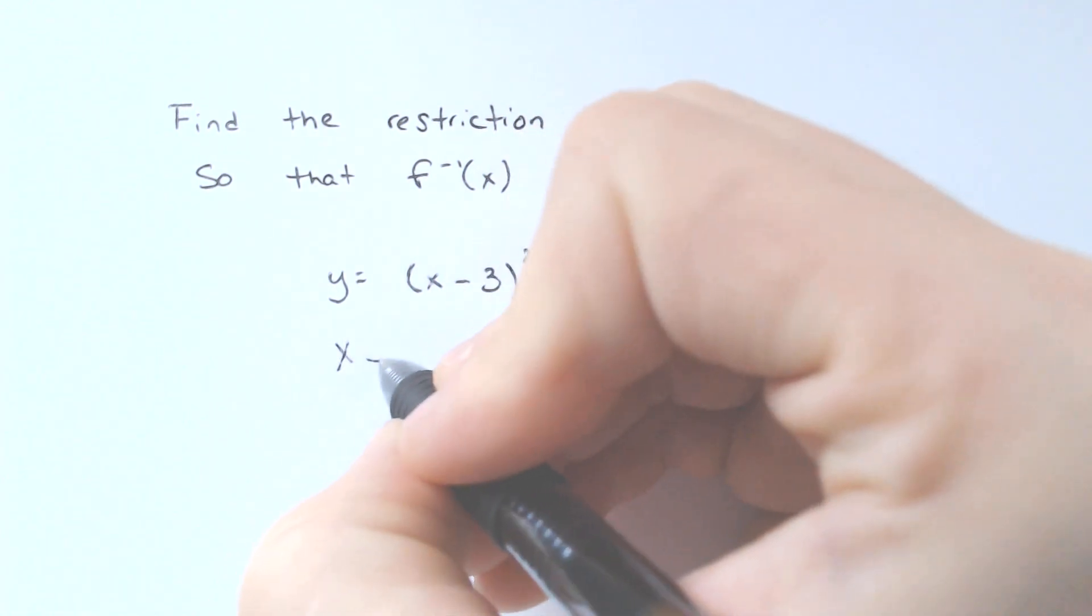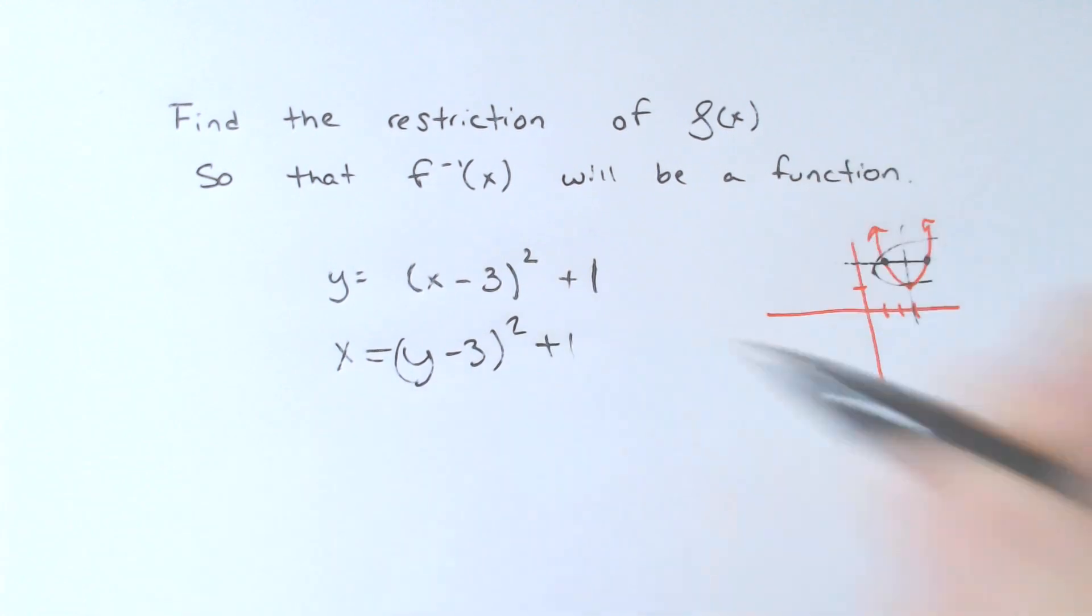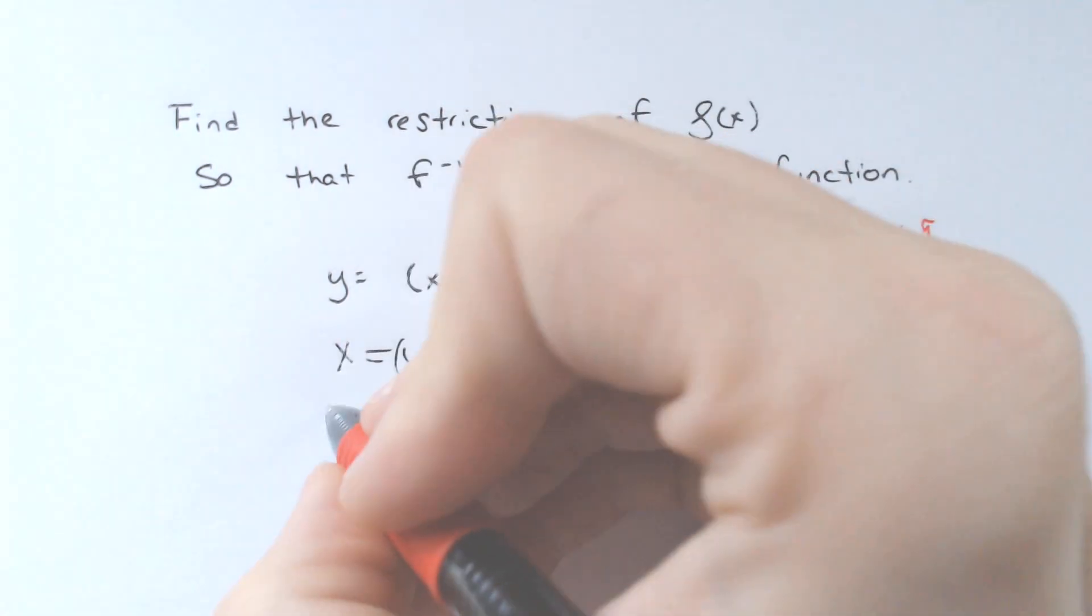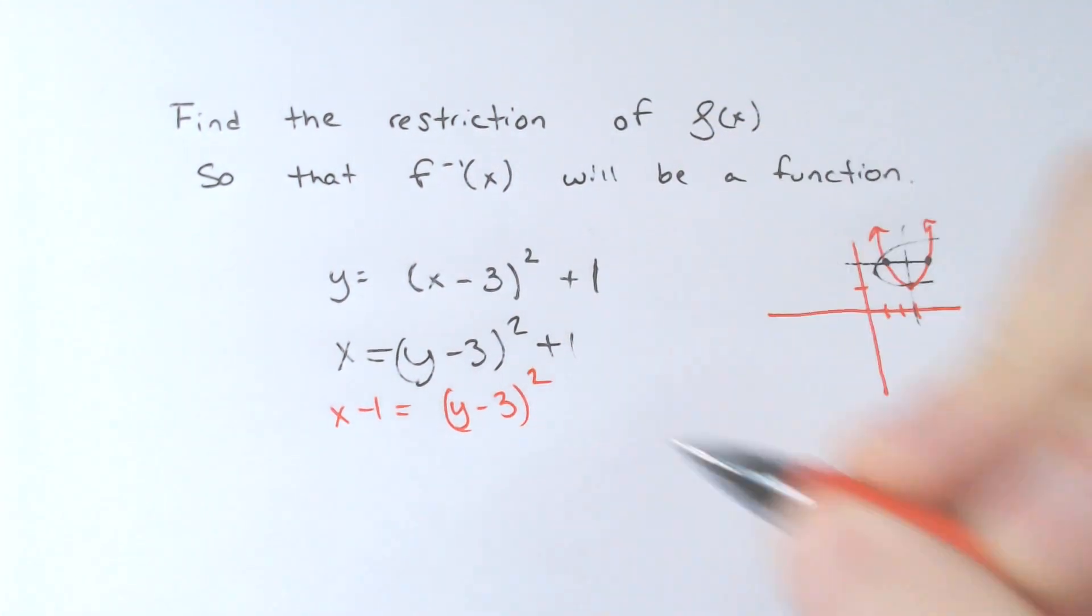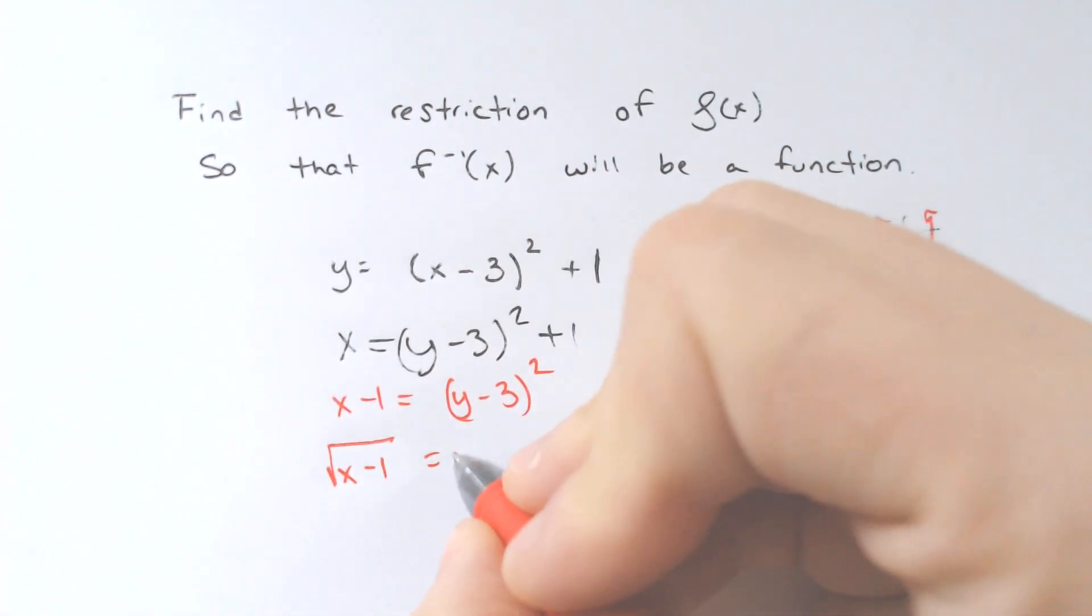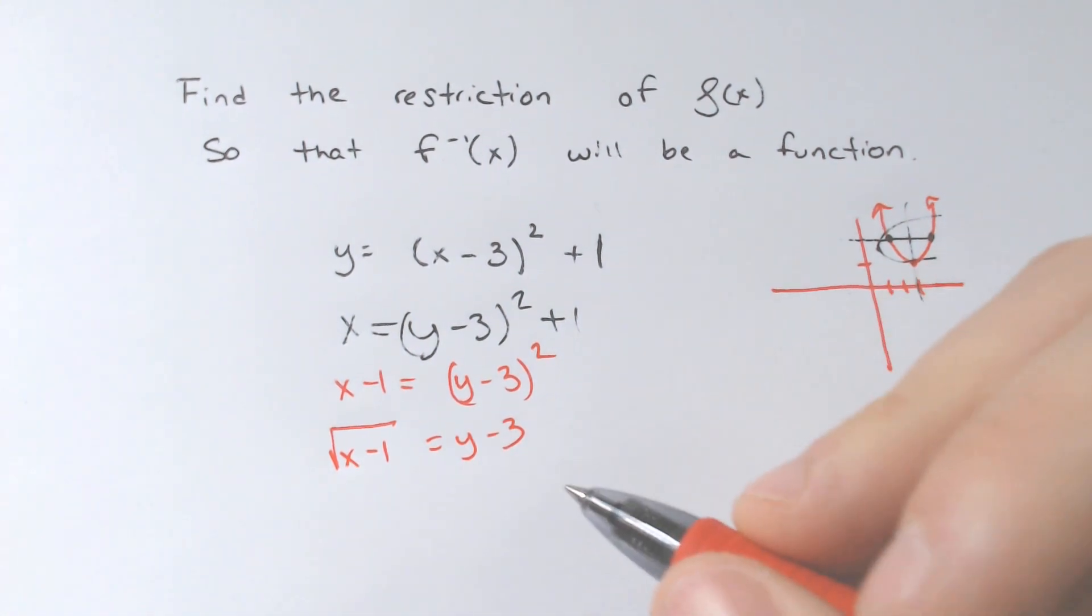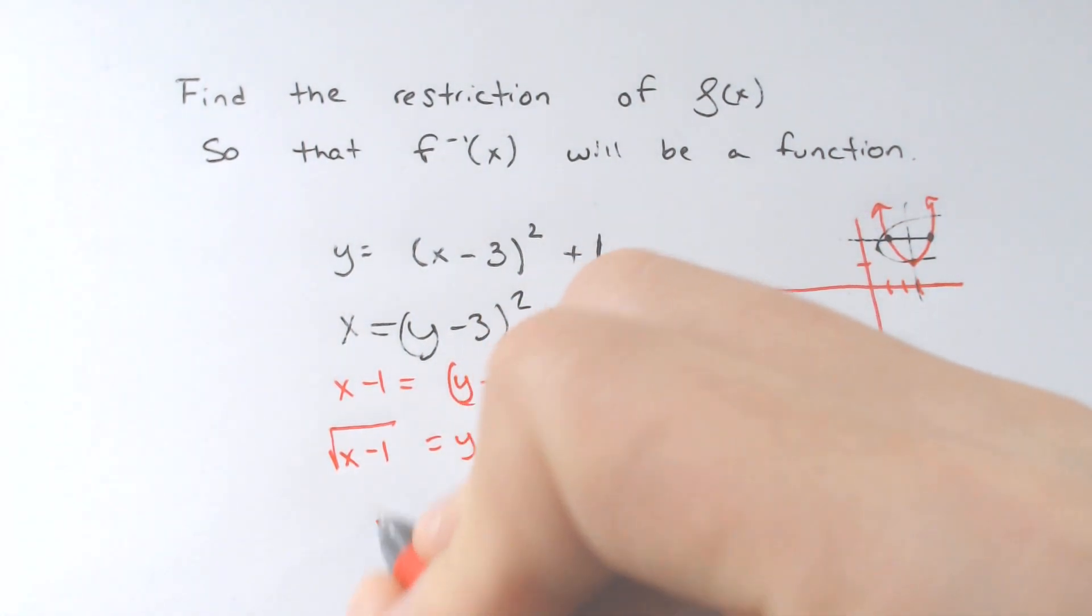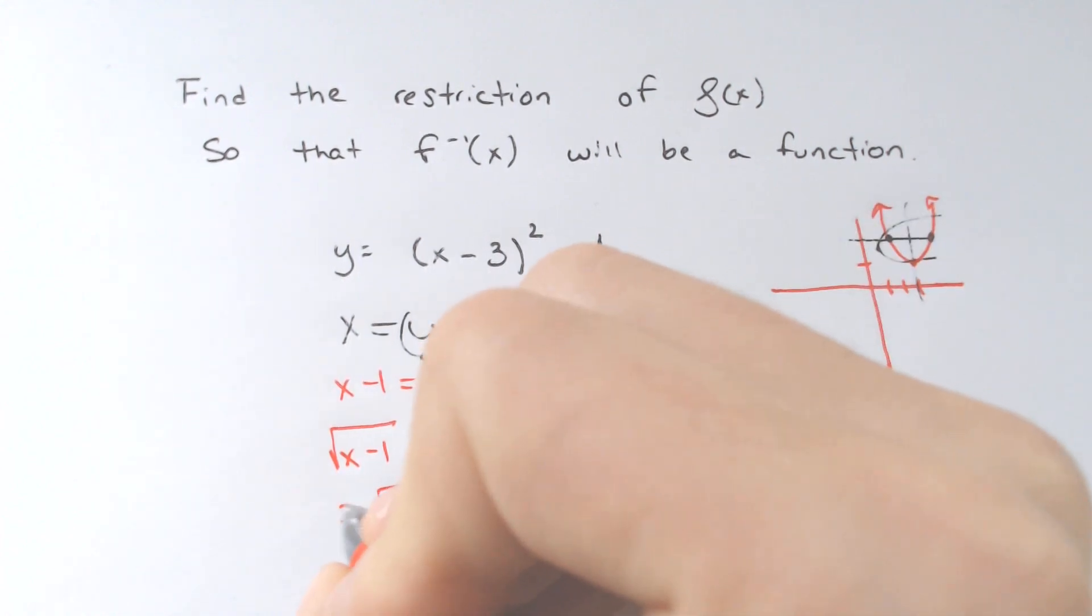So that would be x equals y minus 3 parentheses squared plus 1. And then we would subtract 1, x minus 1 equals y minus 3 squared. Square root, x minus 1 equals y minus 3 because the square root cancels the squared. Square root, and then add the 3 over. So we end up with the square root of x minus 1 plus 3 is equal to y.